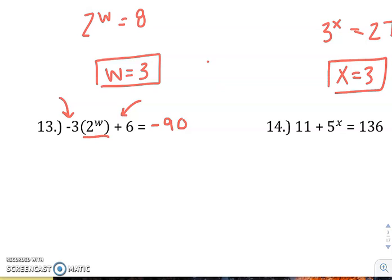So let's do that. Let's subtract the 6 because we usually do that before dividing. So subtract 6. So negative 3 times 2 to the W equals negative 96.